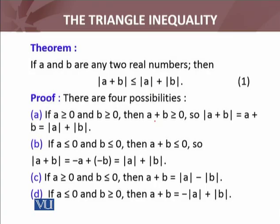There are four possibilities. If a is greater than or equal to 0 and b is greater than equal to 0, we will discuss all four cases separately. Then what about a plus b? Of course, a plus b will also be greater than or equal to 0. So by definition of the absolute function, what will be the answer? |a + b| = a + b, which could be written as |a| + |b|. So equality holds. This inequality holds when both a and b are greater than or equal to 0.